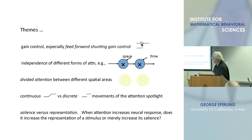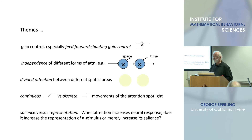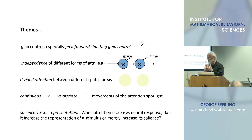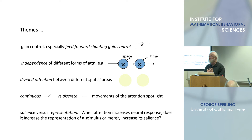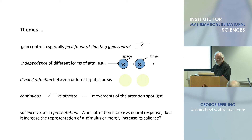A very important principle is shunting gain control — we had an example of that earlier. What attention does is selectively control transmission from one stage to another. There's also independence of different forms of attention — attention to space and attention to time work separately and independently. There's an important distinction between salience and representation: if you're attending to red in an ambiguous motion display, you perceive it in one direction, but if attending to green, you perceive the opposite direction. Attending to red makes a dim red act like a bright red in its effect on motion — but attending to something doesn't change its appearance; it makes you see it more accurately.